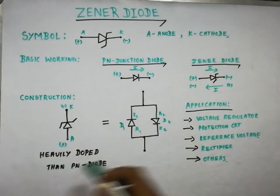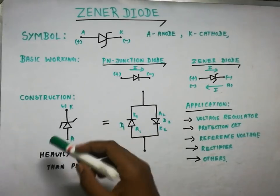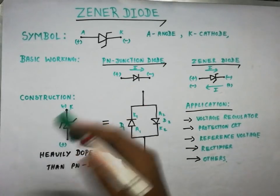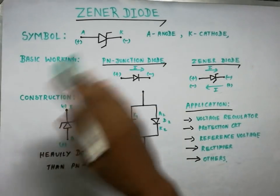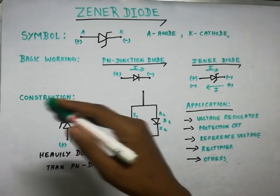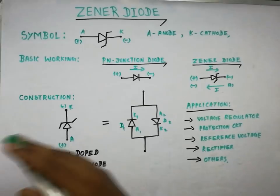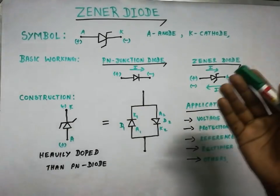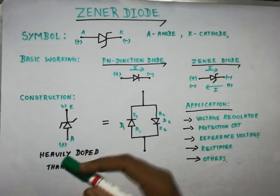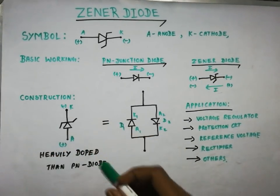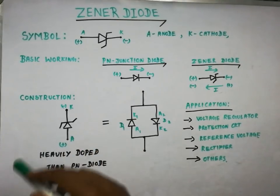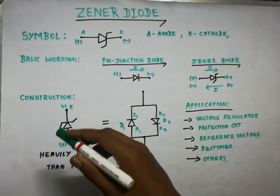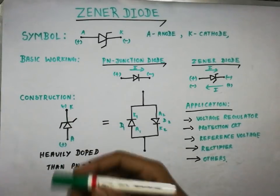Now let's talk about the construction. The Zener diode is constructed from pure silicon with P-type and N-type regions, similar to a PN junction diode. The key difference is that in a Zener diode, the P and N regions are very heavily doped with impurities — more heavily doped than a standard PN junction diode. That heavy doping is the main reason for its special behavior.